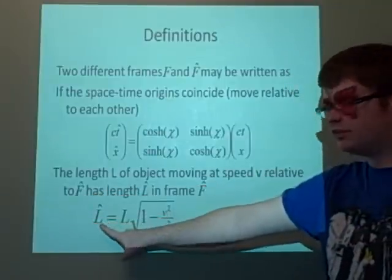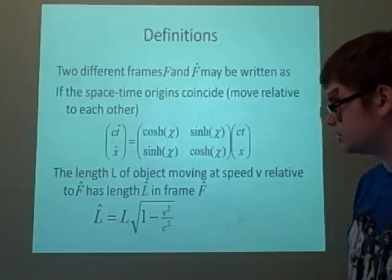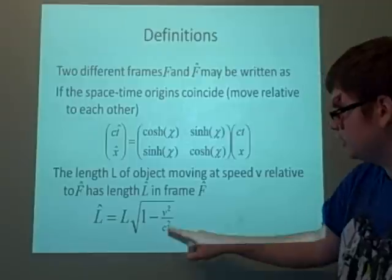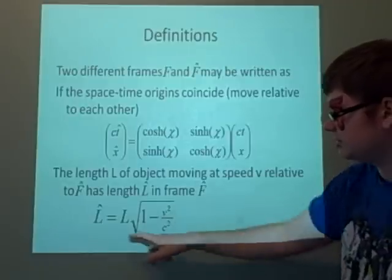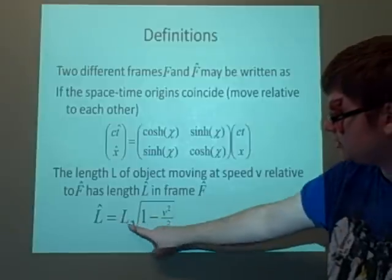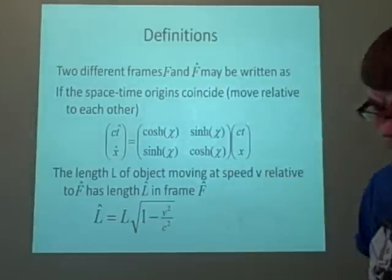So, the length in F-hat is given as L-hat, just to keep it simple, and the length in just normal F is given as L, as is the velocity V. And you calculate it just by this little formula here, which is nice and easy, which is L times the square root of 1 minus V-squared over C-squared. So that's all we're going to look at today.